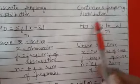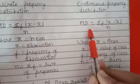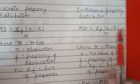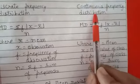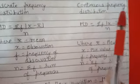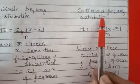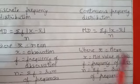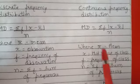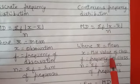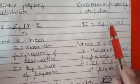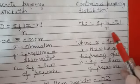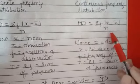For continuous frequency distribution, mean deviation is again sigma f|x minus x-bar| upon n. Since classes are given, our first step is to find the mid value, which we consider as x. Here x-bar is mean, x is the mid value of that particular class, f is frequency of the class, and n is sigma f.